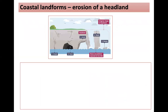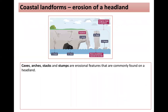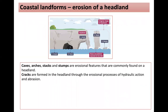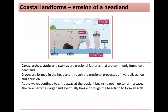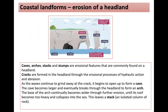On headlands, erosion may form caves, arches, stacks and stumps. Cracks form in the headland through hydraulic action and abrasion. As waves continue to grind away at the crack, it opens up to form a cave, which becomes larger and breaks through to form an arch. The base of the arch continually widens through further erosion until the roof collapses, leaving a stack behind. That stack is then undercut and collapses again to form a stump.